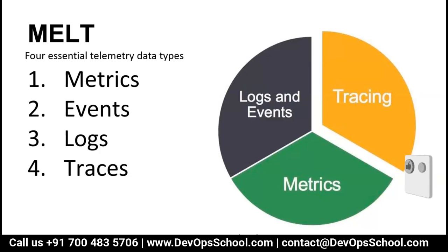In order to make a system observable, you need important data types — we call it MELT: M for Metrics, E for Events, L for Logs, and T for Traces.